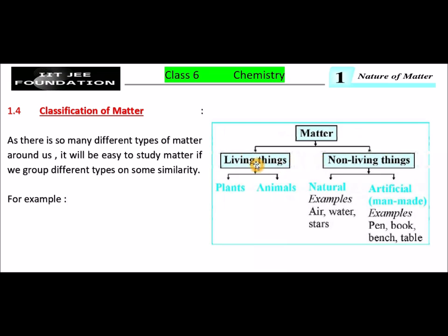Living things, living matter can be divided further into plants and animals. Animals means animals and even we, human beings are also considered as animals only.